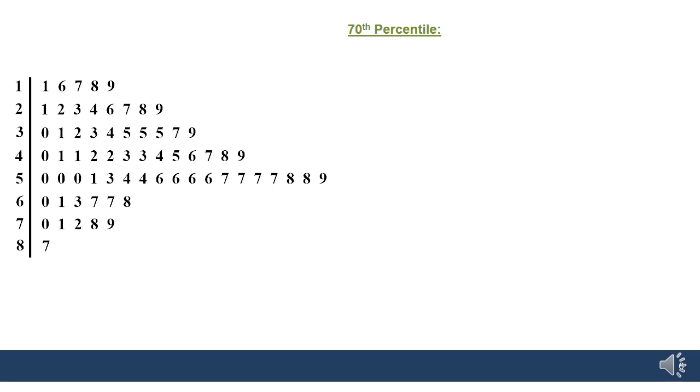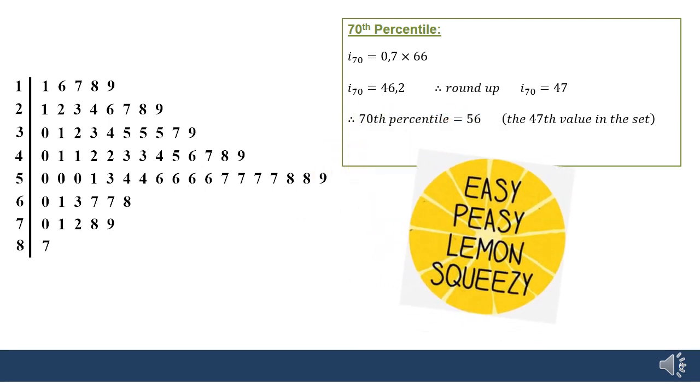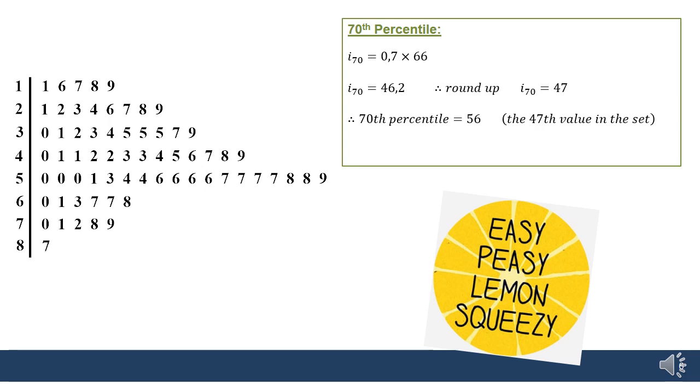One more example for 70th percentile. We take 70% of the total number of values, 70% of 66 gives me 46.2. We said that whenever we have a decimal, we round up to the next nearest whole number. So the 70th percentile is in the 47th position. I'd count out up to 47, and I'd land around about here, where 56 is the 47th position. So that puts it in the 70th percentile. Easy peasy.